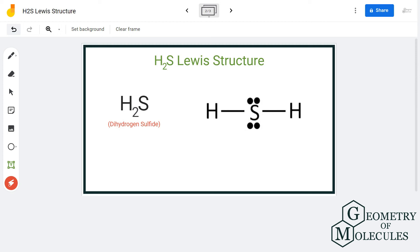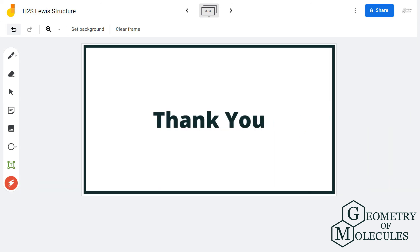Yet the octets of all these atoms are complete. So this is the Lewis structure for H2S. For more videos on polarity, Lewis structure, and molecular geometry of other molecules, subscribe to our channel and thank you for watching.